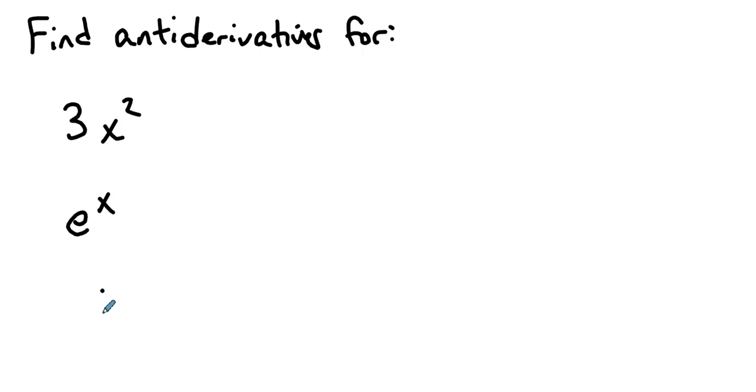So let's find anti-derivatives for 3x squared, for e to the x, for 1 over x. Let's take a moment. Think them through. Not too long. Answers coming in 5.